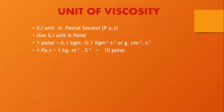Now, the units of viscosity. The SI unit of viscosity is Pascal second. The non-SI unit is Poise. One Poise is equal to 0.1 kg·m⁻¹·s⁻¹, or gram per centimeter per second. One Pascal second is equal to 1 kg·m⁻¹·s⁻¹, which is equal to 10 Poise.